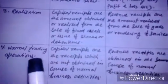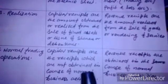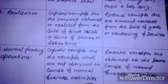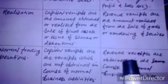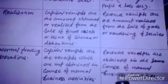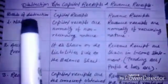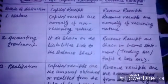The fourth distinction is on the basis of normal trading operations. Capital receipts are receipts which are not obtained in the course of normal business activity, whereas revenue receipts are obtained in the course of normal business activity. These four types form the basic concept and basis of distinction between capital receipts and revenue receipts.